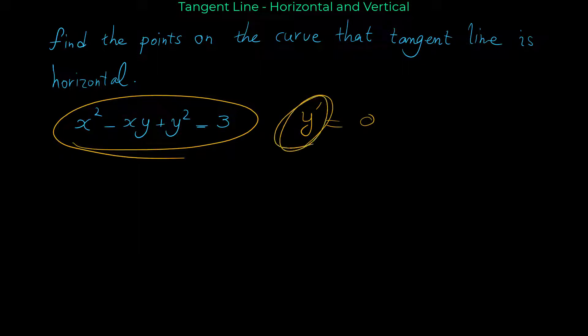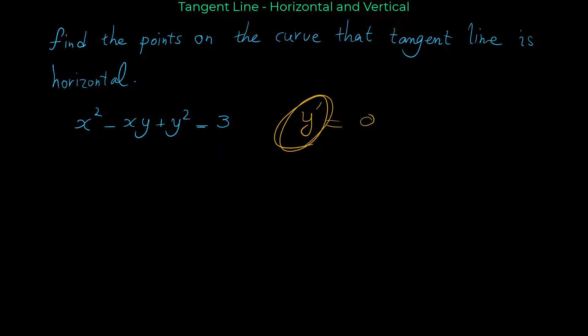For finding y' from this relation, we have to use implicit differentiation method. This is an implicit relation, so we use implicit differentiation for finding y'. After we find y', we have to set it equal to 0, because we want to find the points where the tangent line is horizontal.